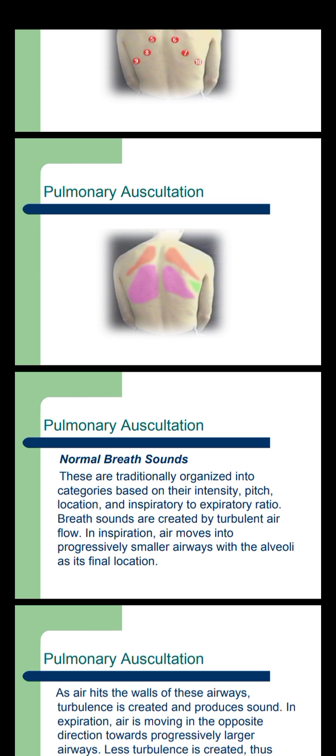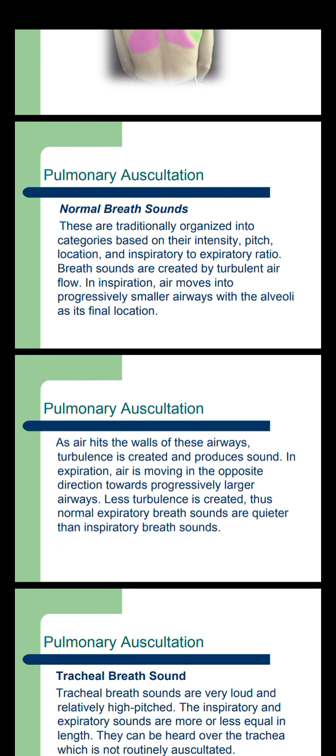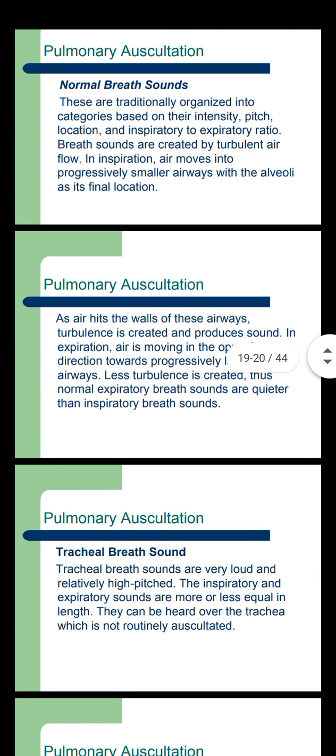Now we are coming to discuss normal breath sounds. They are traditionally organized into categories based on their intensity, pitch, location, and inspiratory-to-expiratory ratio. Breath sounds are created by turbulent airflow. In inspiration, air moves into progressively smaller airways with the alveoli as the final location. As air hits the walls of these airways, turbulence is created and produces sound. In expiration, air is moving in the opposite direction toward progressively larger airways, so less turbulence is created; thus, normal expiratory breath sounds are quieter than inspiratory breath sounds.